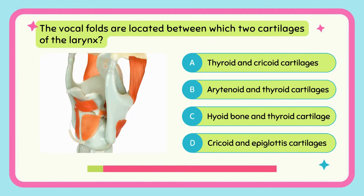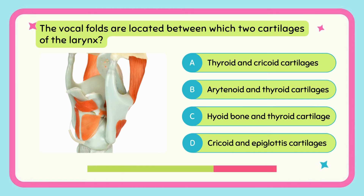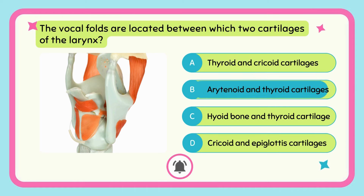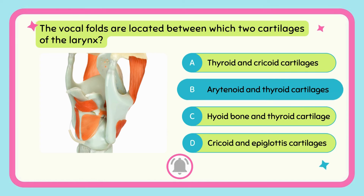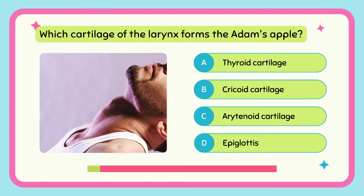The vocal folds are located between which two cartilages of the larynx? Arytenoid and thyroid cartilages. Which cartilage of the larynx forms the Adam's apple?